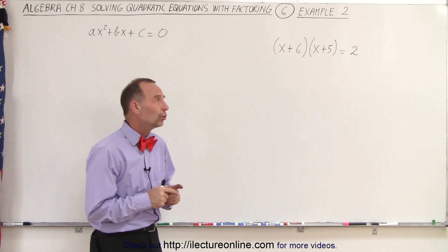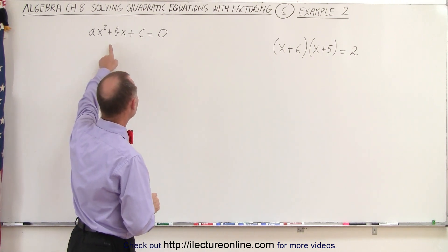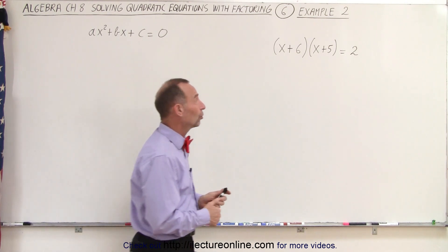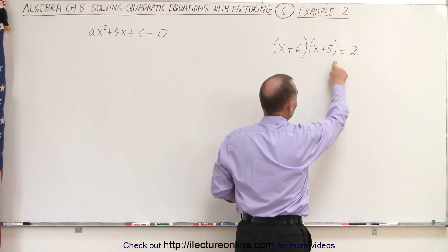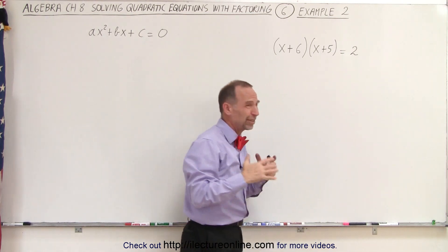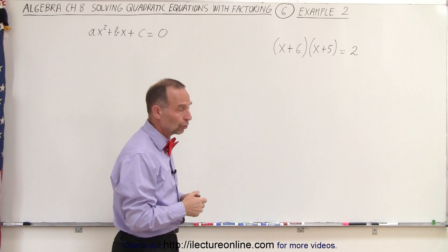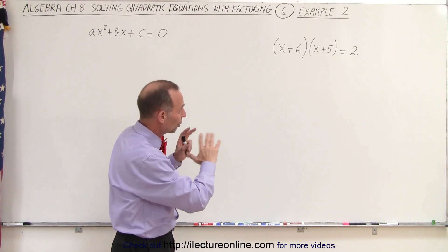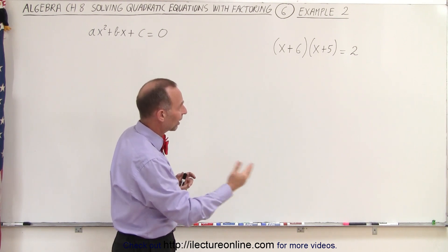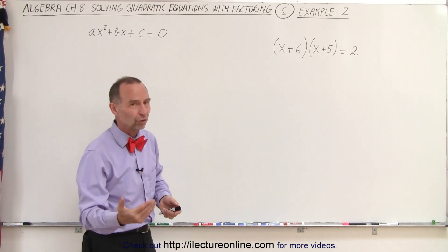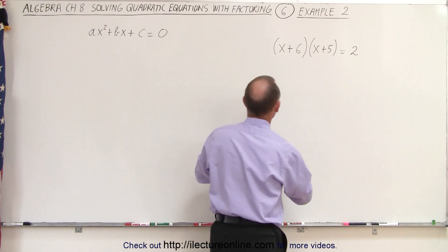So what we probably should do is first get it into this format before we try to factor it. The temptation is to go ahead and move the 2 to the left side, set all this equal to 0, but then you can't use the technique to solve for x that we normally use. So first what we're going to do is multiply everything out on the left side, move the 2 across, get it into this format, and then factor it so that we can solve it. So let's go ahead and do that.